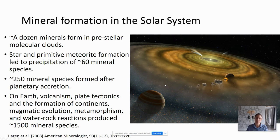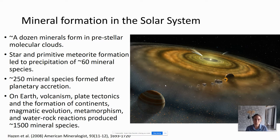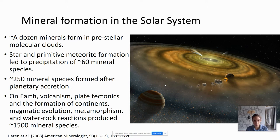Let's briefly talk about minerals forming in the solar system. Minerals form even before stars form — about a dozen minerals form in pre-stellar molecular clouds. After stars and primitive meteorites form, this results in about 60 mineral species. On Earth, which is a fairly complex terrestrial planet, volcanism, plate tectonics, the formation of continents, magnetic evolution, metamorphism, and water-rock interactions produce about 1,500 mineral species.